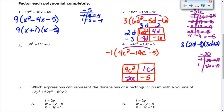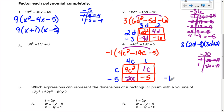Finding the GCF for each row and column: the top row — 4c squared and 1c — the biggest number into 4 and 1 is just 1, but they share a c, so GCF is c. The bottom row has a negative, so I take out negative 5 (5 goes into both 20 and 5). Left column — 4c squared and negative 20c — GCF is 4c. Right column — 1c and negative 5 — GCF is just 1. So the factors are negative 1 times (c minus 5) times (4c plus 1).